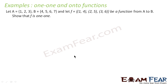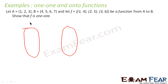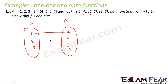Let us take one more example — a very simple question. There are two sets A and B, and a function is defined from A to B. Set A has elements 1, 2, 3 and set B has elements 4, 5, 6, 7. The function f is defined as: f(1,4) meaning 1 is linked to 4, f(2,5) meaning 2 is linked to 5, and f(3,6) meaning 3 is linked to 6.